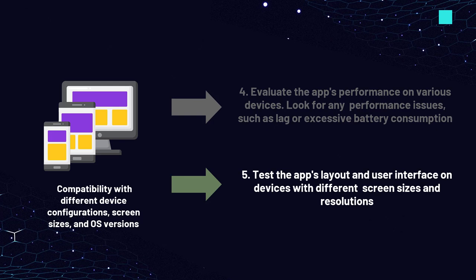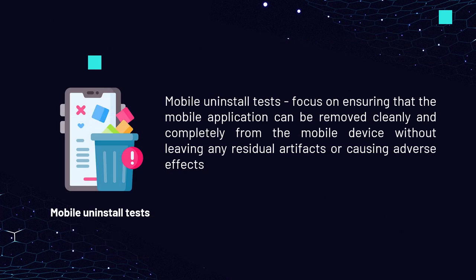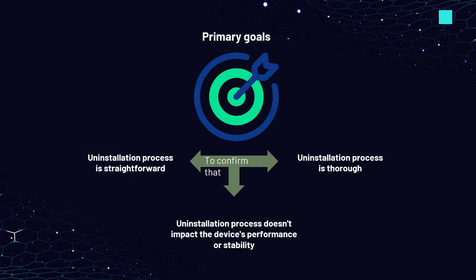By conducting these installation tests, mobile app developers and quality assurance teams can identify and address issues related to the installation process, helping enhance the overall quality and usability of mobile applications. Following installation testing comes the mobile uninstall tests. Mobile uninstall tests focus on ensuring that the mobile application can be removed cleanly and completely from the mobile device without leaving any residual artifacts or causing adverse effects. The main objectives are to confirm that the uninstallation process is straightforward, thorough, and doesn't impact the device's performance or stability.